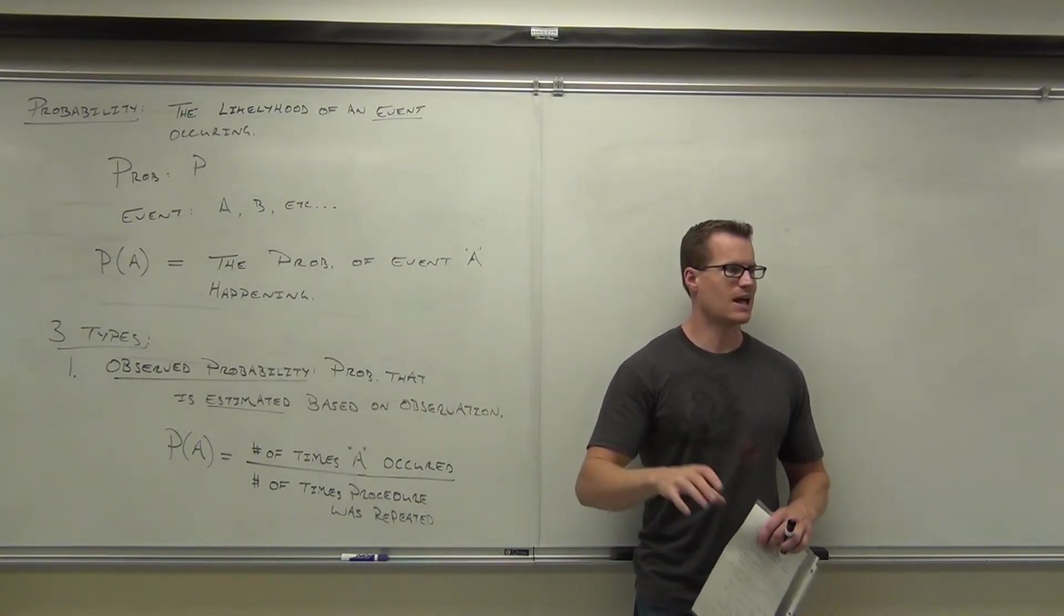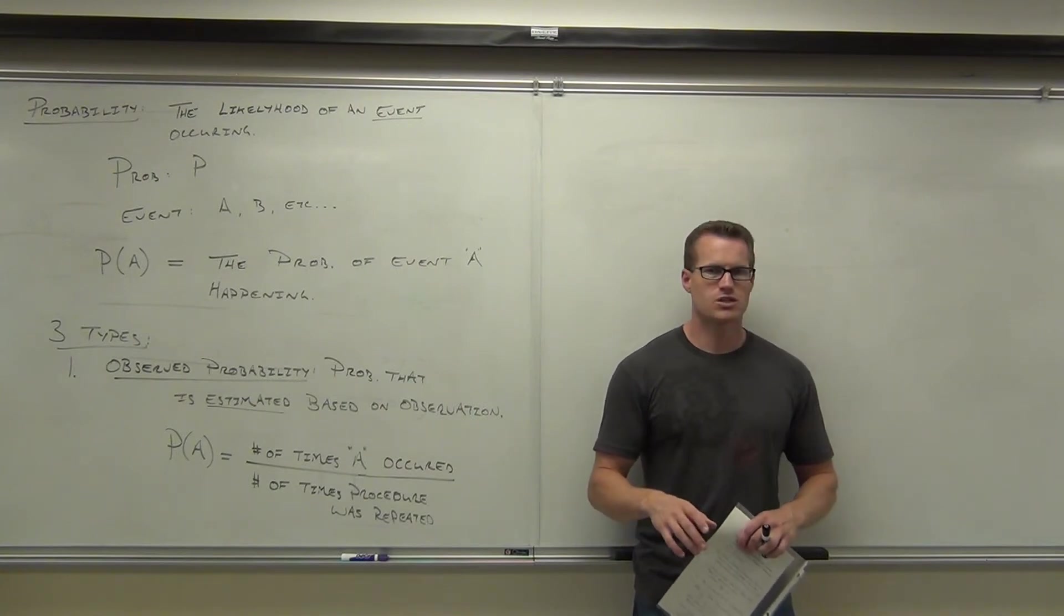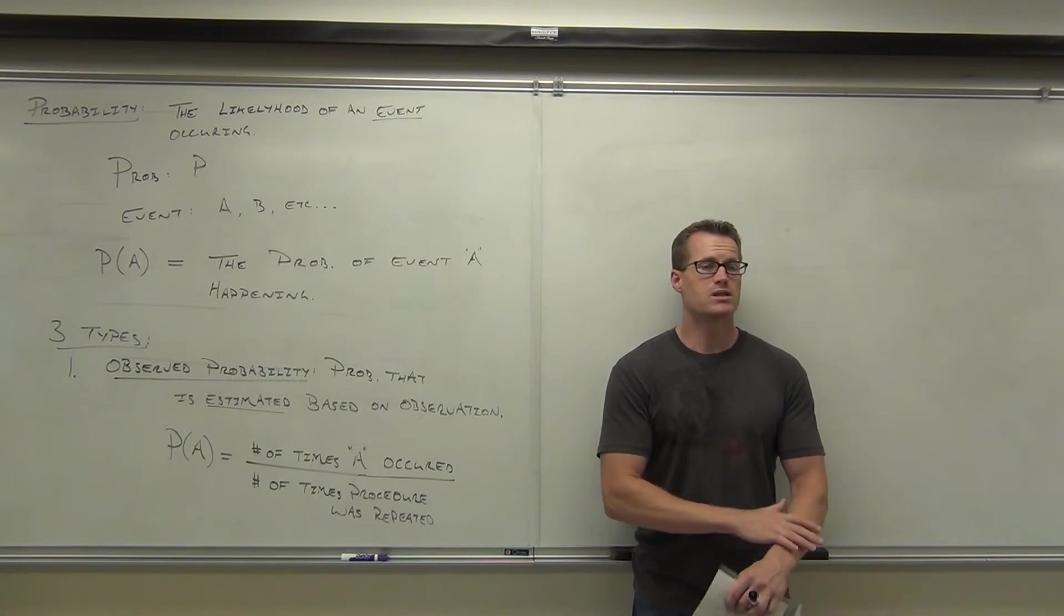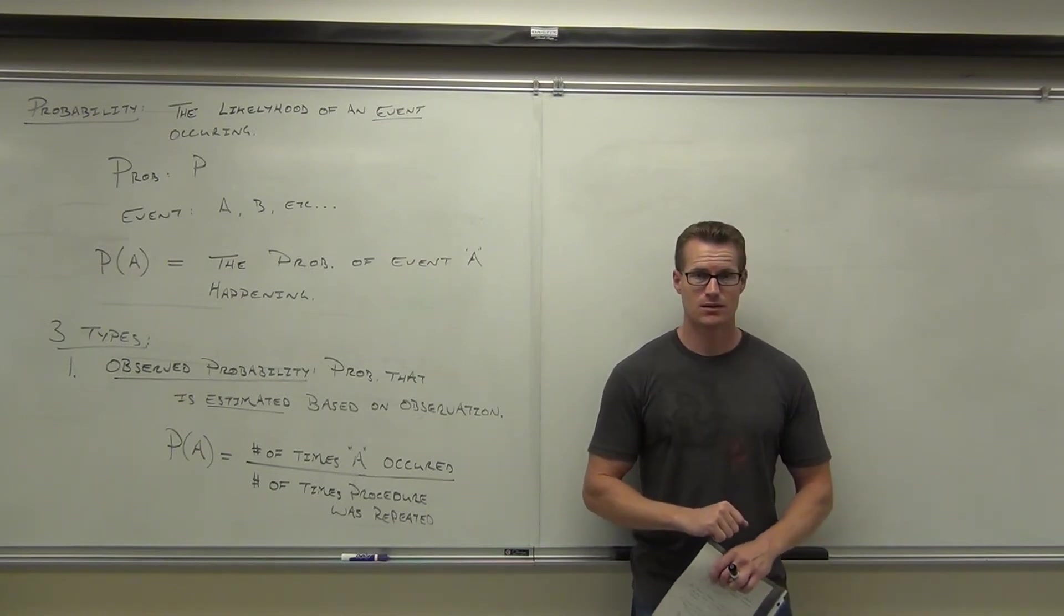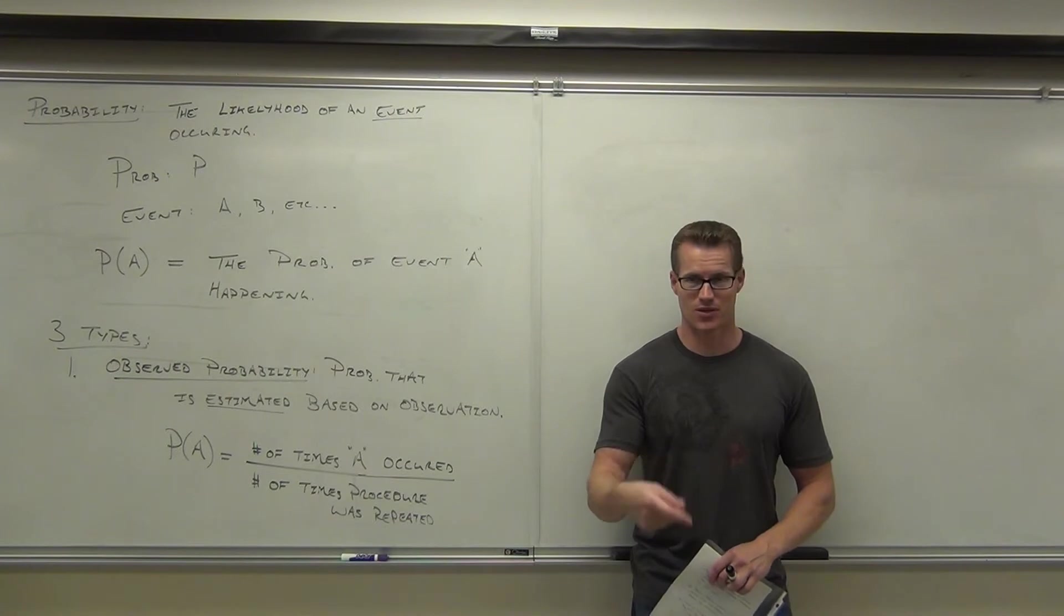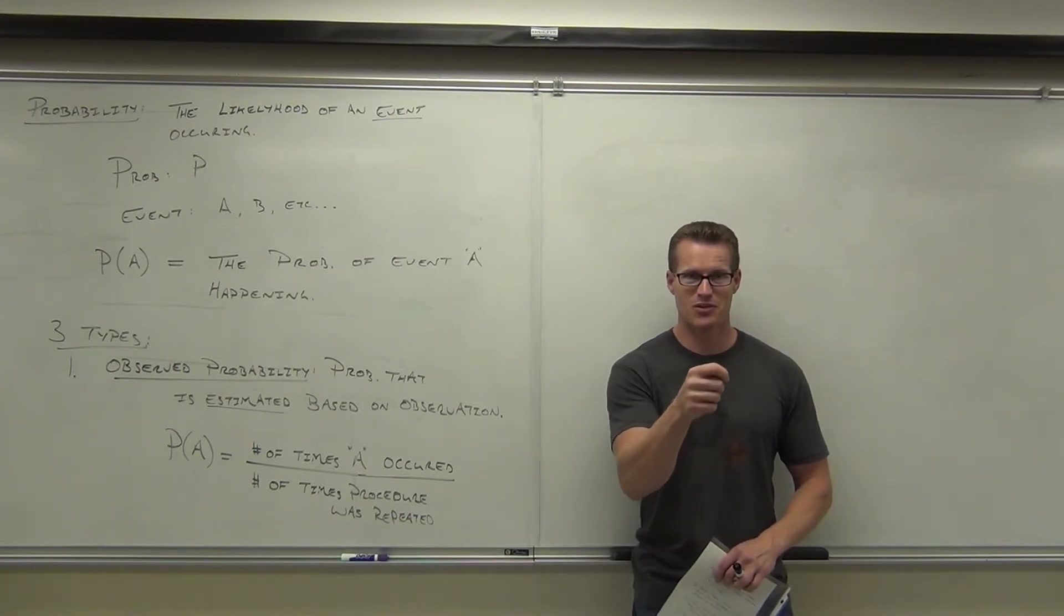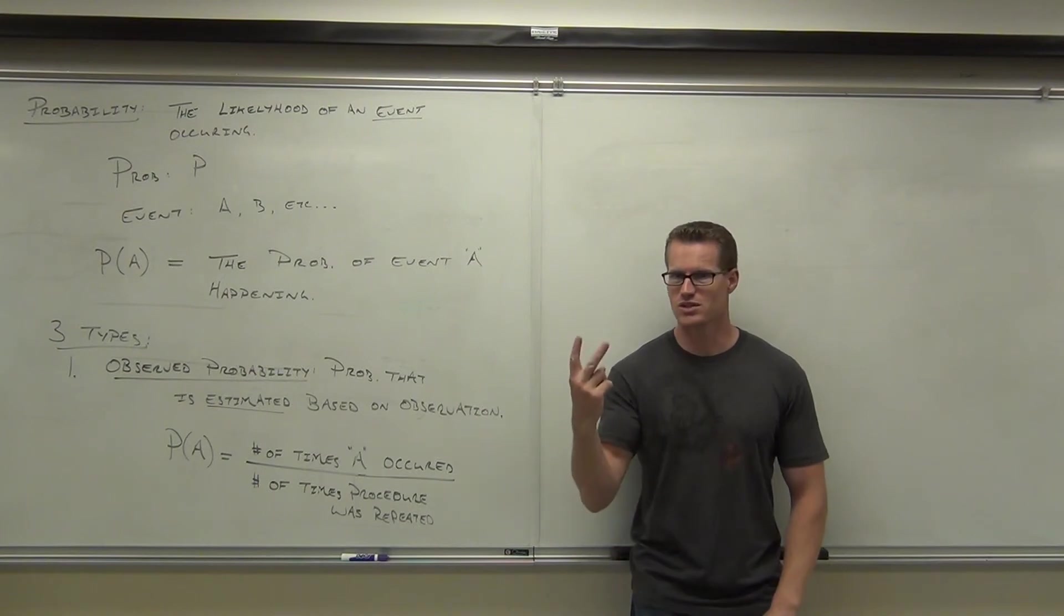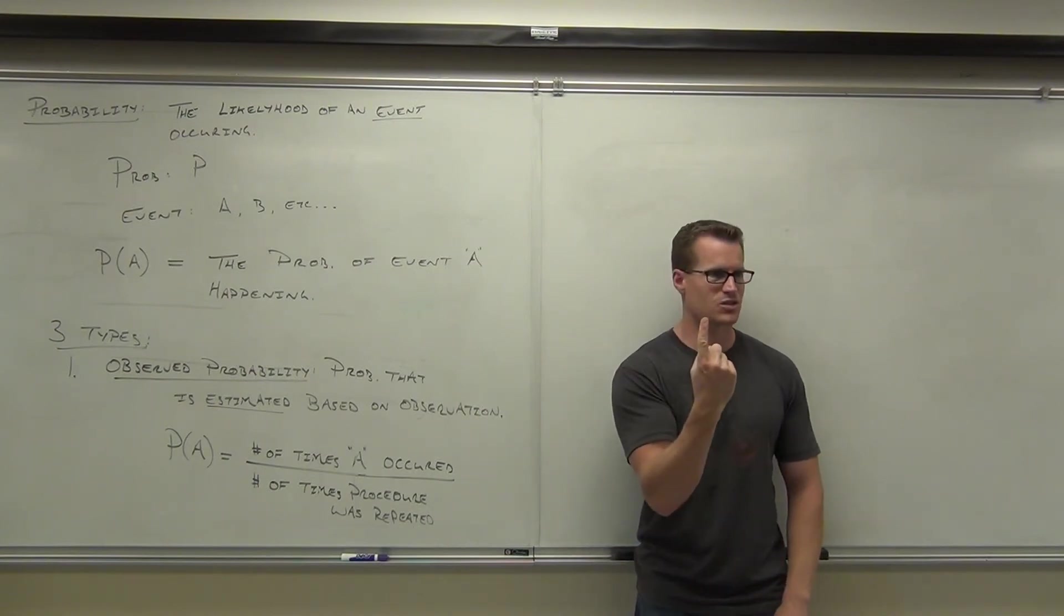Observed is something that actually happened, you measured it. The next one is classical probability. I say to you, what's the probability of flipping a coin and getting a head? Obviously, right? There's two choices. One of those choices is a head, so you get 50%, right?